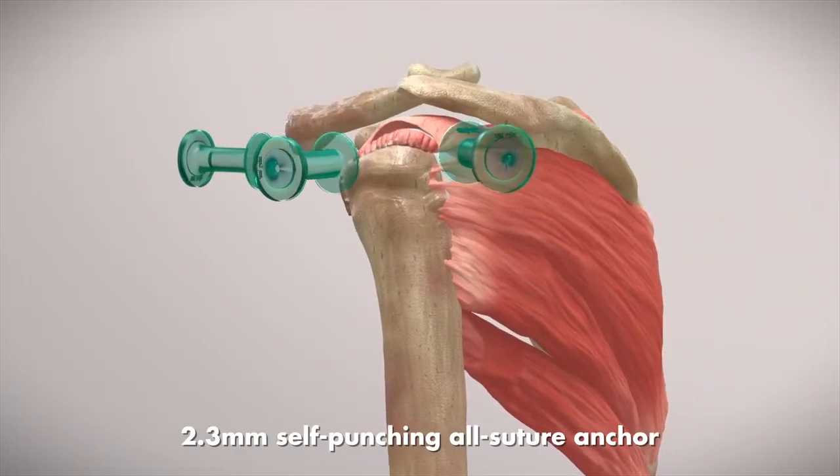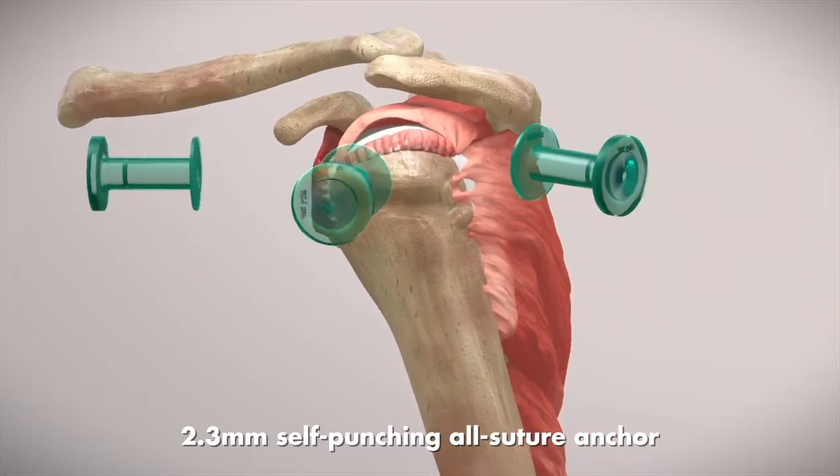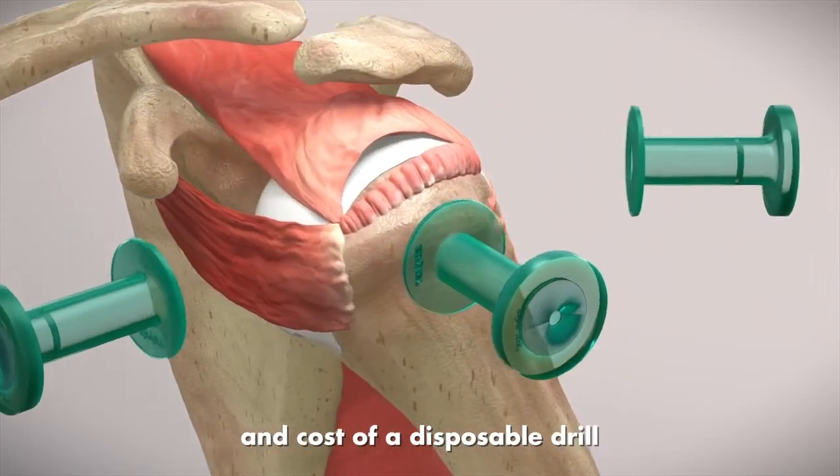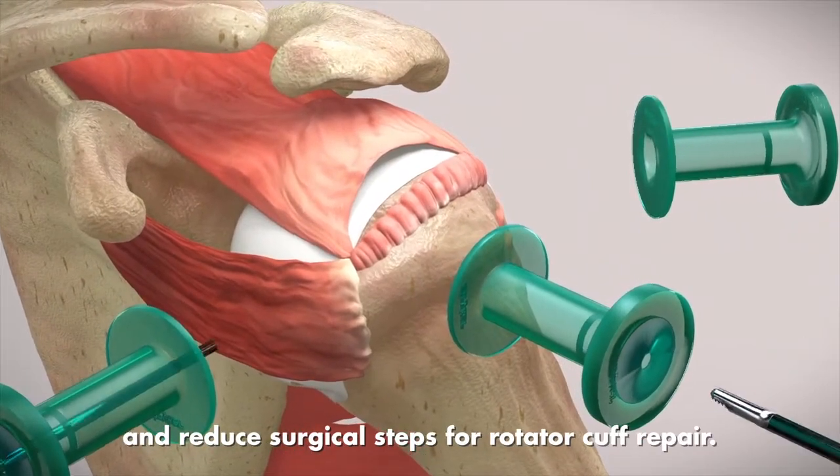Stryker's ICONICS SPEED is a 2.3mm self-punching all-suture anchor designed to eliminate the need and cost of a disposable drill and reduce surgical steps for rotator cuff repair.